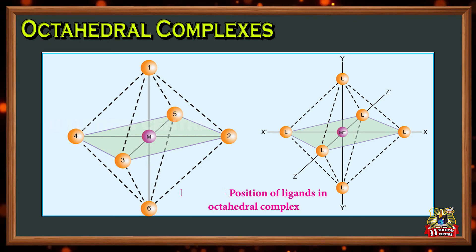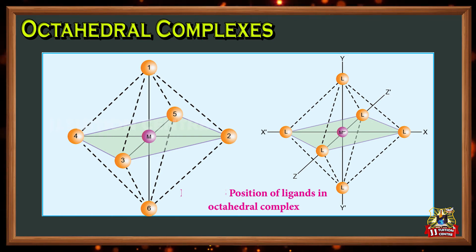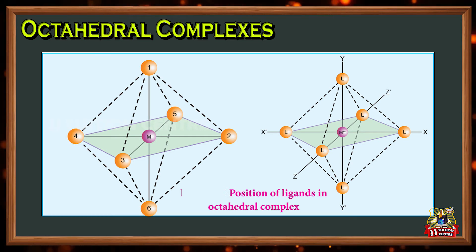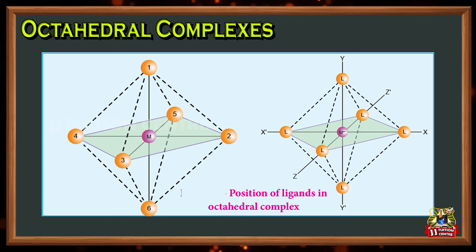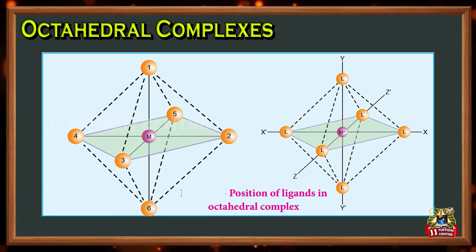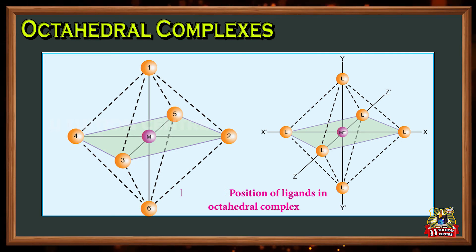So the ligands are placed according to this scheme. The positions 1,2; 1,3; 1,4; 1,5; 2,3; 2,5; 2,6; 3,4; 3,6; 4,5; 4,6; and 5,6 are identical. If two similar groups are present in any one of these positions, the isomer is referred to as a cis isomer. Similarly, the positions 1,6; 2,4; and 3,5 are identical, and if similar ligands are present in these positions it is referred to as a trans isomer.